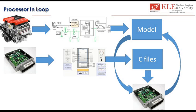Next is Processor In-Loop. I model the engine in the simulation software, and I also model the controller. I have the engine model, and I generate a hex file or a binary file from the C file, and dump it to the target hardware. The engine model runs on the desktop or host machine, while the binary file runs on the actual hardware. I put them together in a loop — you send data to the target hardware and receive feedback from it. This loop is called Processor In-Loop, where actual hardware is used but the plant model runs on the host.